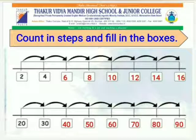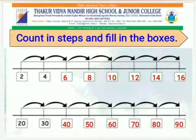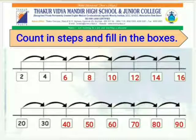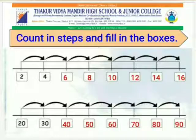Now let's see the next example. Here we have to count in step of 10, meaning we have to find a difference of 10 numbers. So children, if we move from the number 30 by counting, we get 40, 50, 60, 70, 80, and 90.